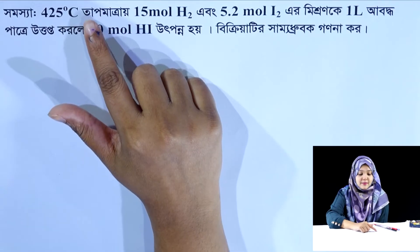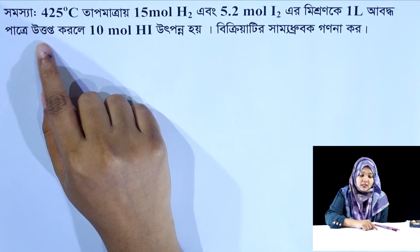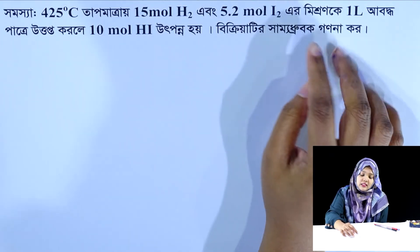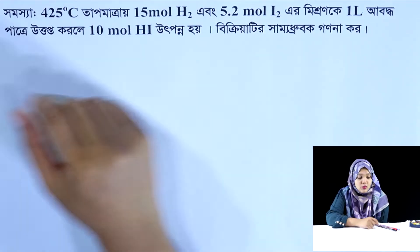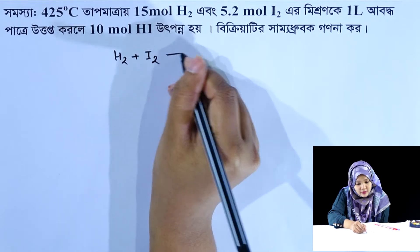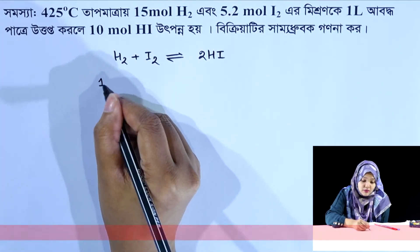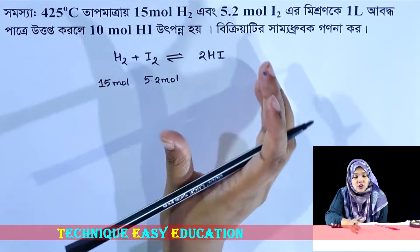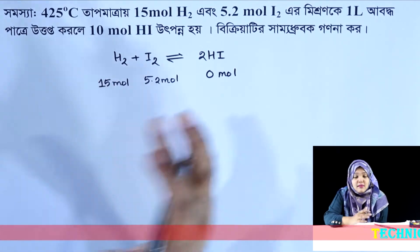Here we can see: 425 ml cc stop material. 1.5 mol hydrogen, 5.2 mol iodine, mistrand k, 1 L dm³. Hydrogen iodide: 10 mol hydrogen iodide. 2 mol hydrogen iodide — weird wizard, 3 mol carbon, 1.0 mol peroxy benzide, 1.0 mol.